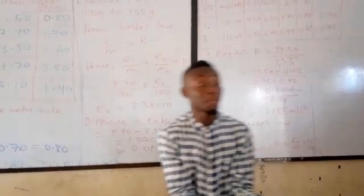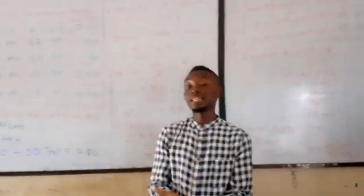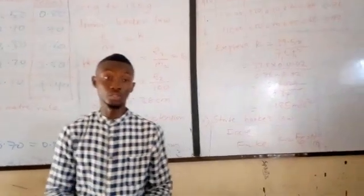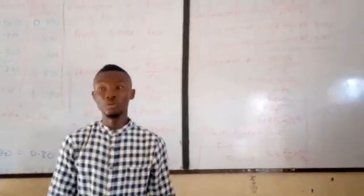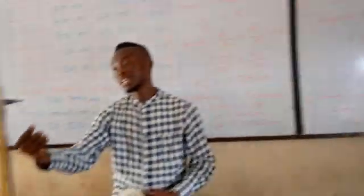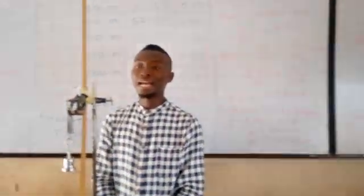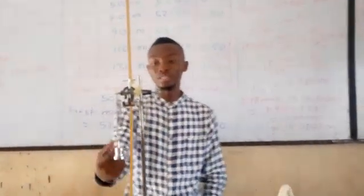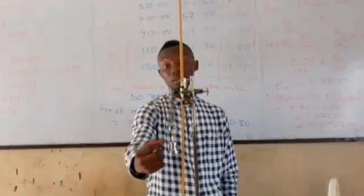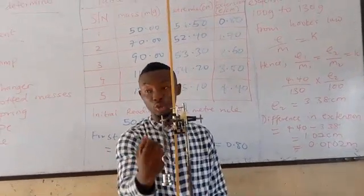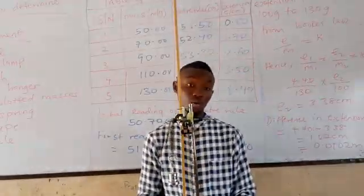So, then I also ask you some other questions like the precautions taken in this experiment. One of the precautions is that I avoided error due to parallax when taking readings on the meter rule. Secondly is I avoided conical oscillations of the mass slotted on the spring. I made sure it is set to vertical oscillation.